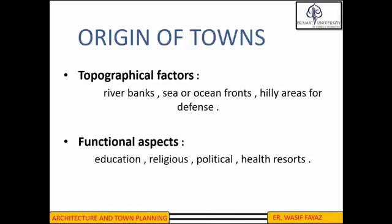The two categories are topographical factors and functional aspects. Regarding topographical factors, a town settlement can be started if the area is favorable for industrial units, or people can settle on a hilly area for defense. A plain area can be used for business activities, or people can settle near river banks, sea, or ocean. The functional aspects responsible for the origin of towns include education, religion, political influence, and health resorts.